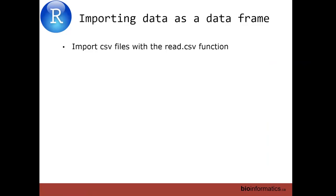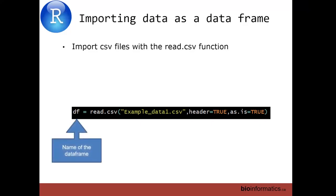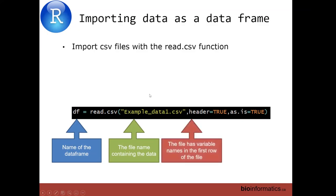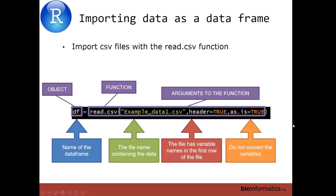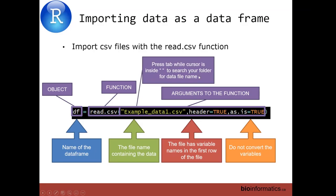So here we're importing our data as a data frame. Once you do the read.csv function, it brings your data into your R environment as a data frame — a two-dimensional object. You've named your data frame DF, which is why it creates that DF object in your environment pane. The file name is in quotes, header=TRUE, as.is=TRUE — meaning don't convert variables into a grouping variable, just treat them as strings. These are all arguments to our read.csv function.